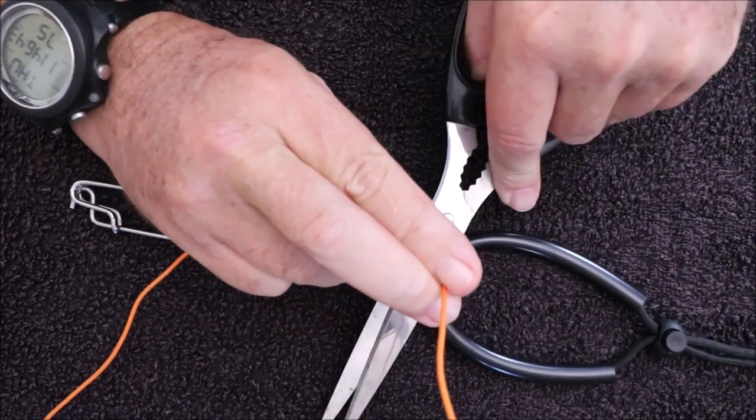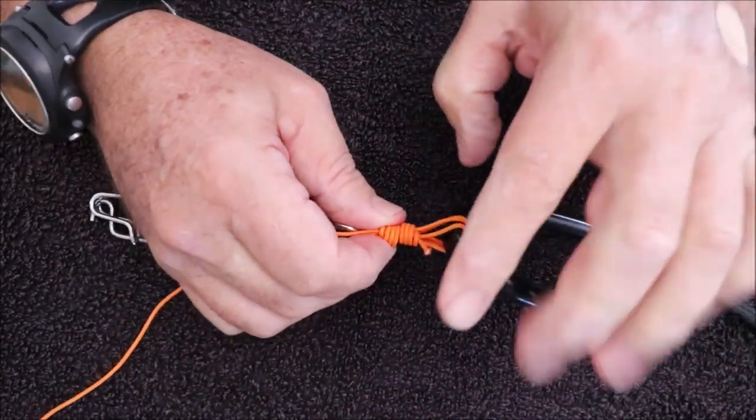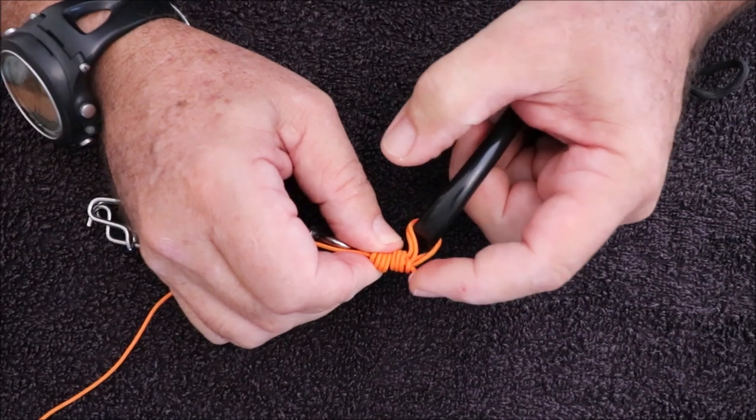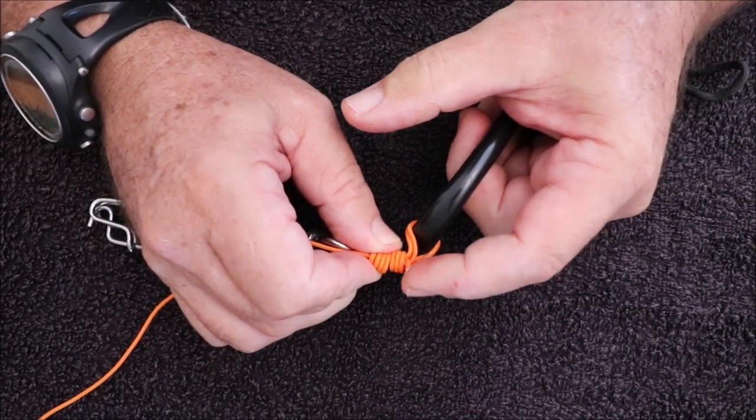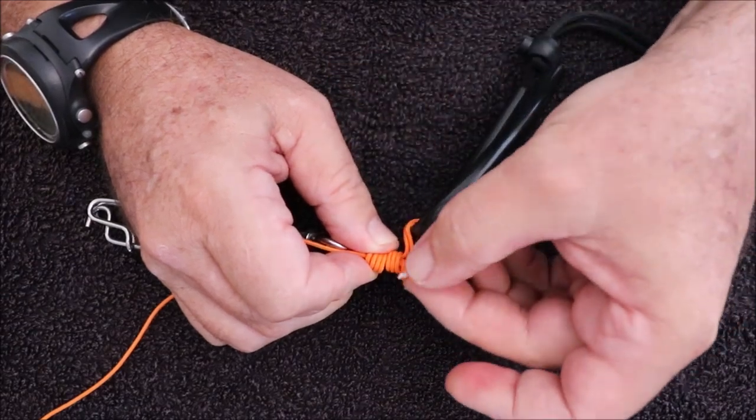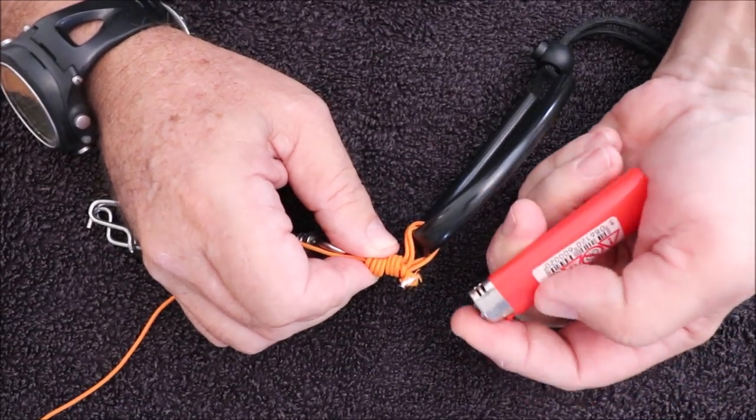That's the knot complete, not very tight yet. Difficult to do in front of the camera. Always cut the tag end leaving a fair amount to fluff up. By fluffing it up, you apply much less heat and it sucks down into a mushroom shape.